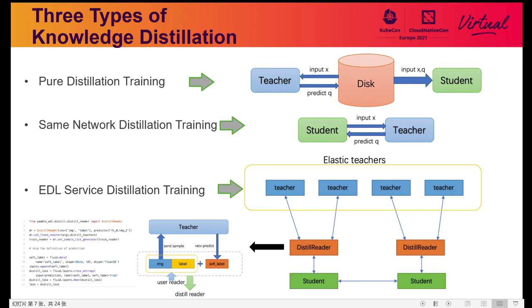The second method is same-network distillation training, where the teacher and student models are placed in the same network. Fixed teacher model parameters are only forwarded while the student model undergoes normal back-propagation training. This is the current mainstream distillation method, similar to a teacher and student in the same classroom. However, this takes up large GPU memory for the teacher model, and the student must wait for the teacher to output each batch of inference before training, while the teacher must wait for the student to finish training each batch — impacting overall training speed.